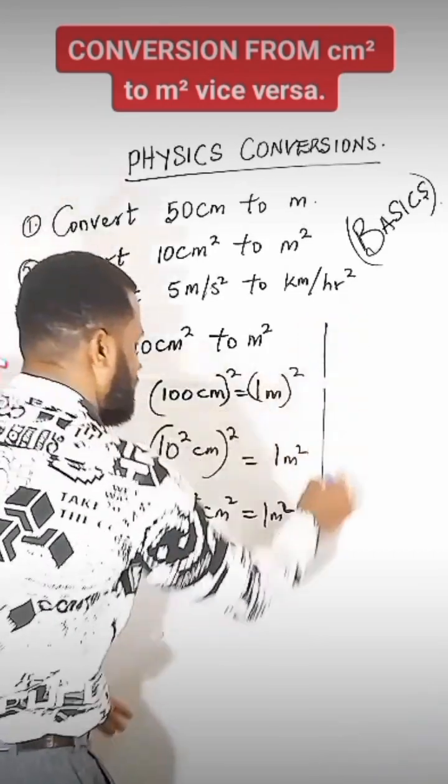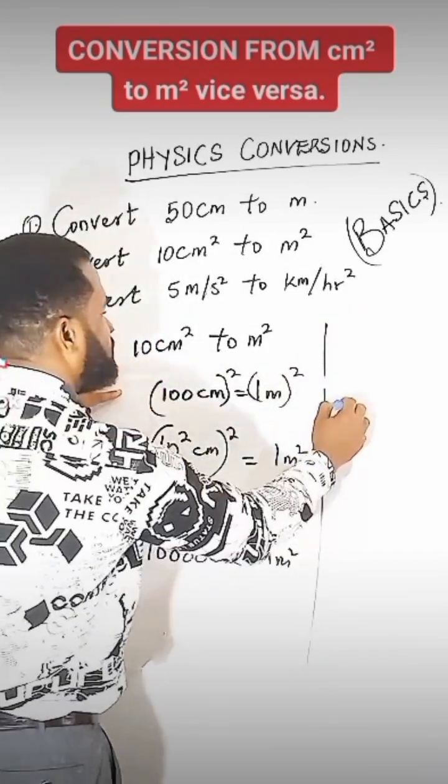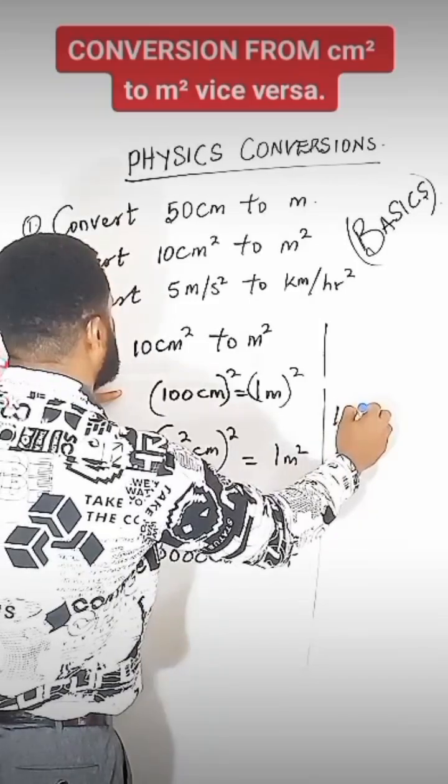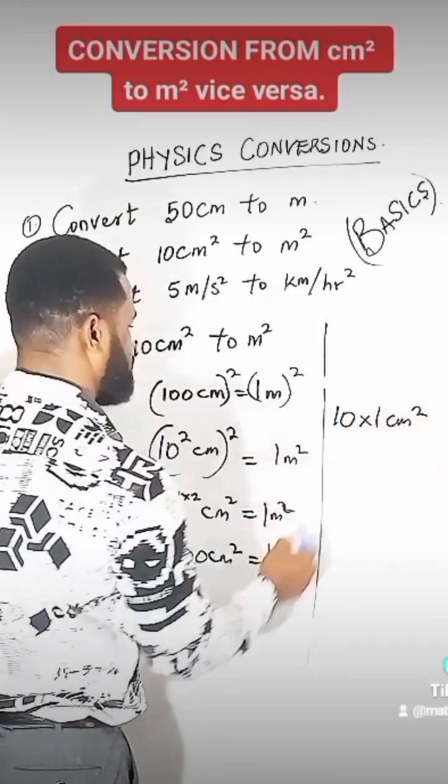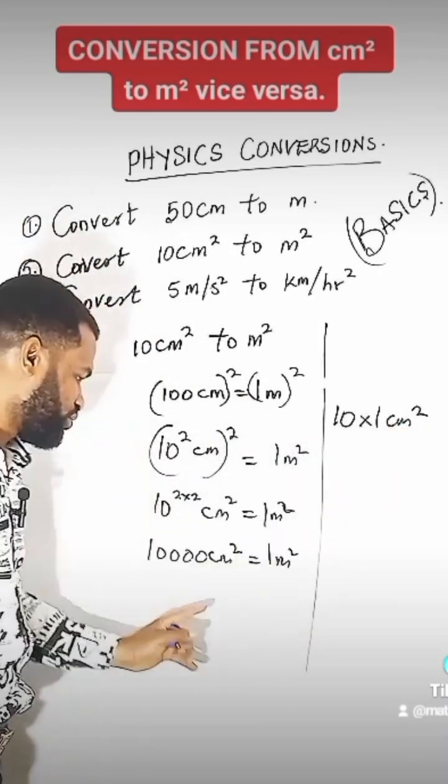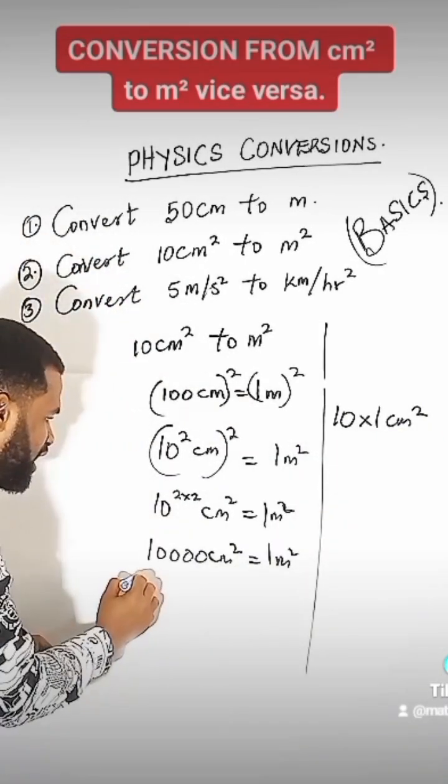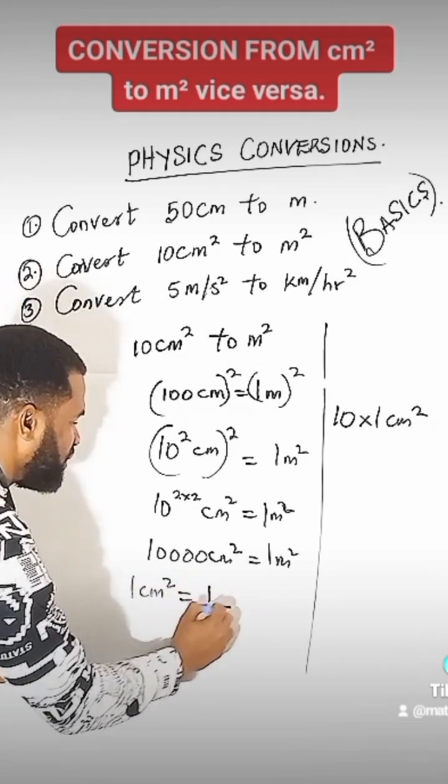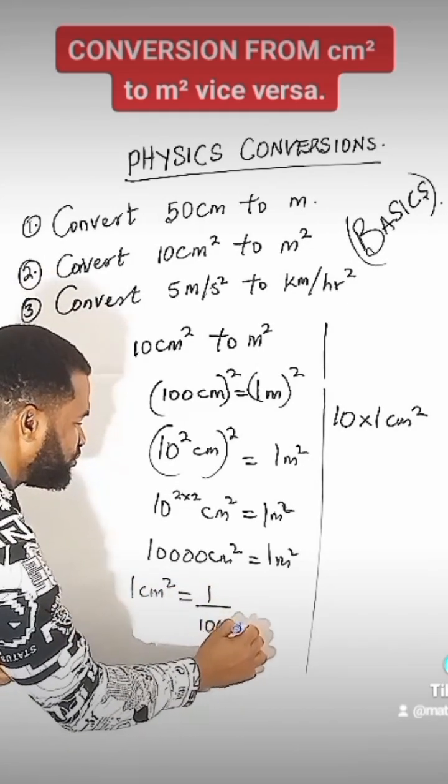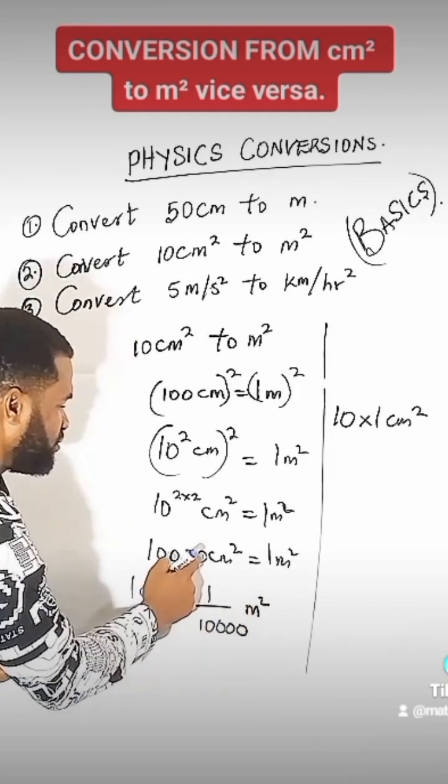Having known this, I will now have 10 times 1 cm squared. So I'm looking for 1 cm squared. To get 1 cm squared, I will divide. I will say that 1 cm squared is equal to 1 over 10,000 meter squared.